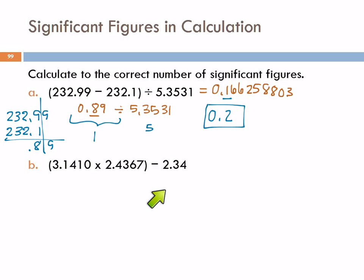Let's look at the next one. Again, we've got mixed operations — a multiplication and a subtraction. I'm going to do the whole problem first and write down the answer, then round it afterwards. 3.1410 times 2.4367 equals, then subtract 2.34, equals. This gives 5.3136747. Now I want to look at the result of this multiplication: 7.6536747.